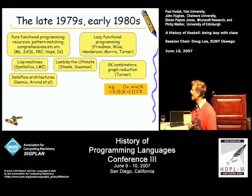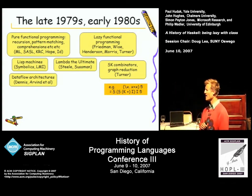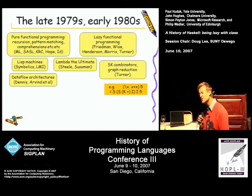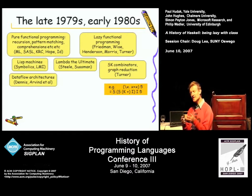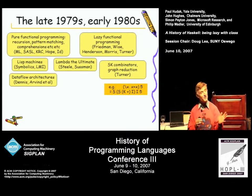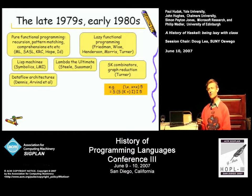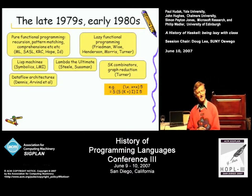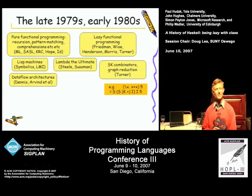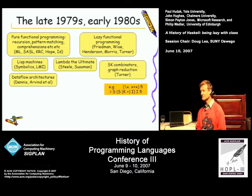Languages like ML — and particularly ML, Sassel, and KRC — used data types and pattern matching. ML in particular had this amazing polymorphic type system we now refer to as ML-style typing, but at that stage it was just ML and it was completely amazing.